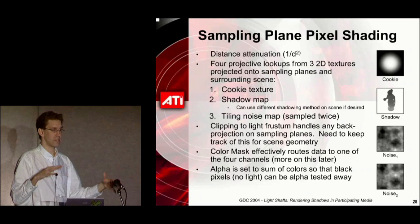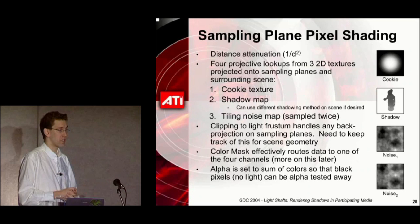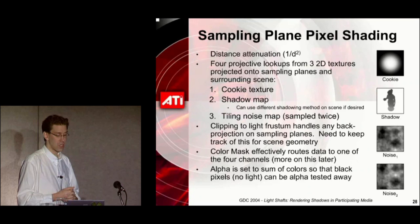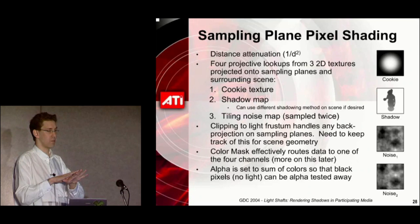There's also a shadow depth map. You can use a totally different method for shadowing the scene — this is just for shadowing the sampling planes. And there's a tiling noise map sampled twice: a 2D tiling noise texture sampled a couple of times and composited together to give a noisy look that tends not to look like it really repeats much.